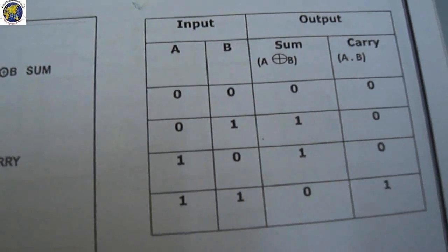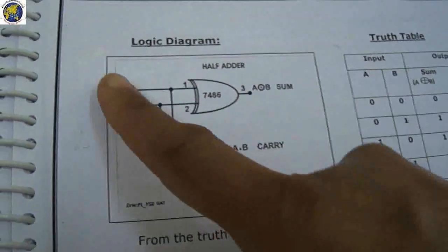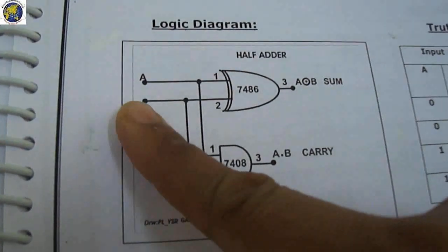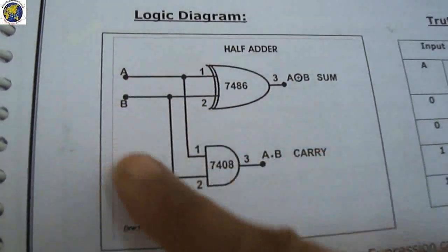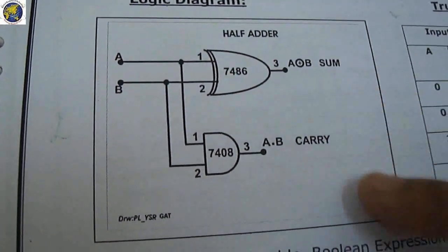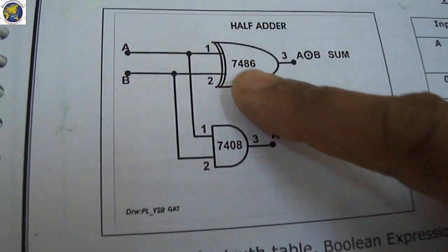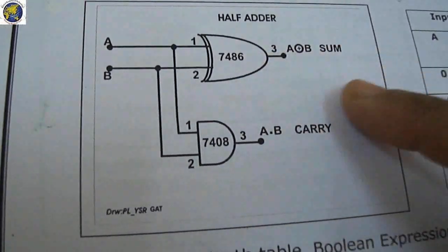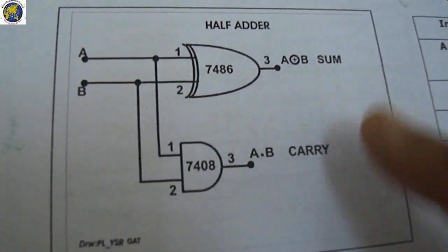In this experiment, A and B are the inputs - two binary inputs - and we'll get the sum and carry output. The 7486 XOR gate output is A XOR B. The AND gate 7408 output is A AND B.